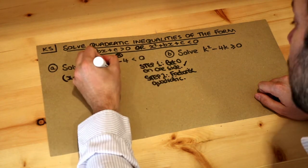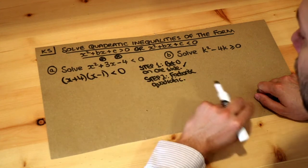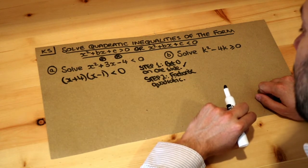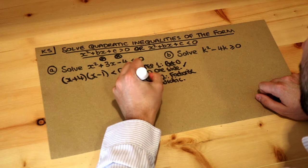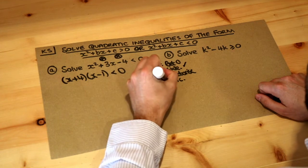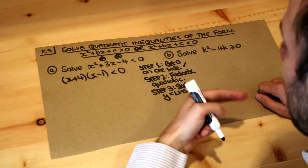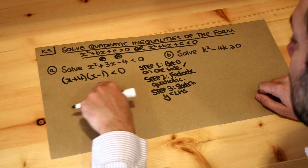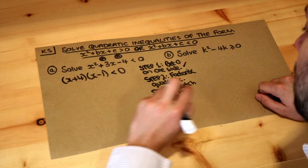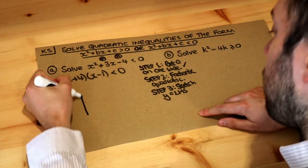We've still got this less than zero. Don't accidentally replace the less than with equals. Now step three is to sketch the quadratic, so sketch y equals the left hand side. And again in a previous video I look at how we can sketch quadratics like y equals x plus four times x minus one. So let's draw this.